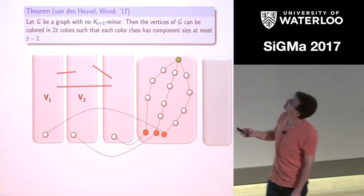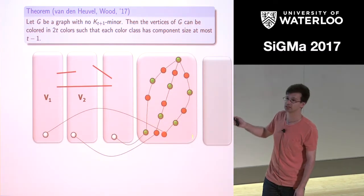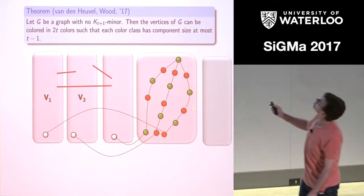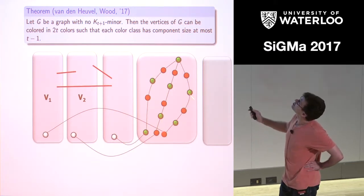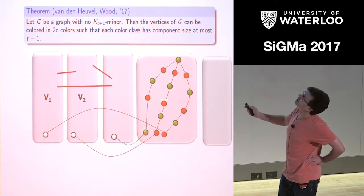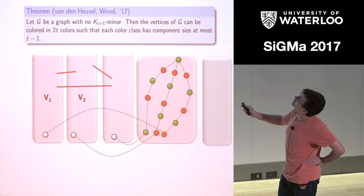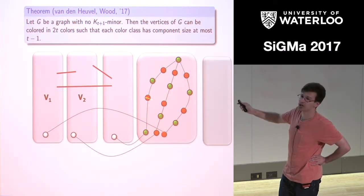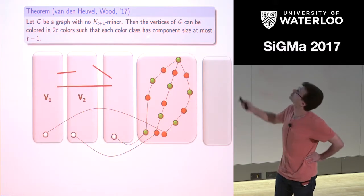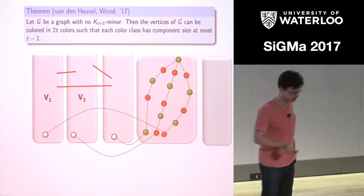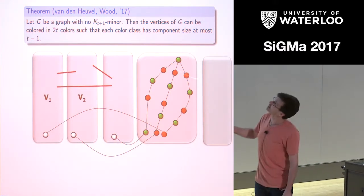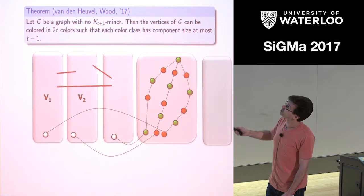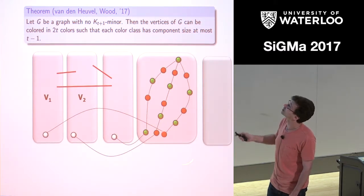Why can I two-color this collection of paths using two colors without creating large monochromatic components? Color by distance from the green vertex, giving layers by distance. Vertices at the same distance — at most t-1 of them — may be adjacent to each other; that's okay. But a vertex of one color cannot be adjacent to another vertex of the same color that is distance two apart, because then my path wouldn't be shortest — I could shortcut. So monochromatic components have size at most t-1. That's essentially the whole proof — a proof which improves on quite a bit of previous complicated work.